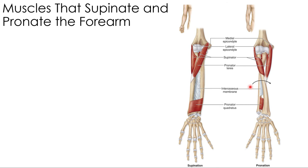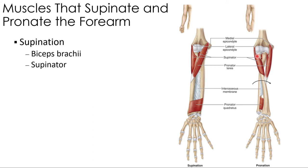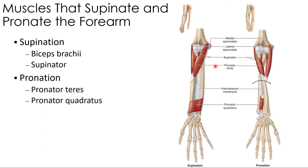Supination and pronation occur at the distal and proximal radioulnar joints. Supination is facilitated by both heads of the biceps brachii and the supinator muscle — a deep muscle covered by most models and charts. Pronation is facilitated by the pronator teres — already mentioned as an elbow flexor — and the pronator quadratus, located at the distal part of the arm. Note that while the pronator teres and biceps brachii both flex the elbow, the pronator teres pronates and the biceps brachii supinates.